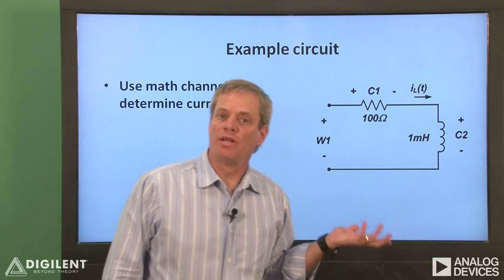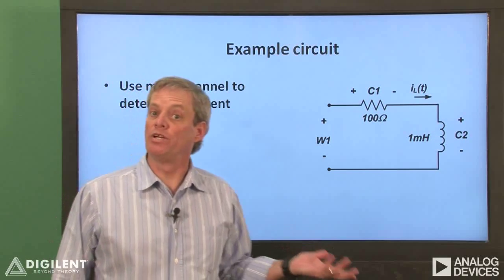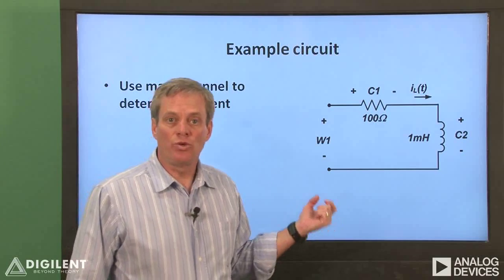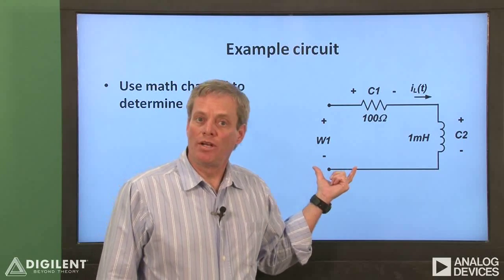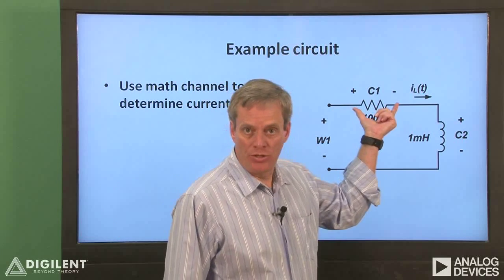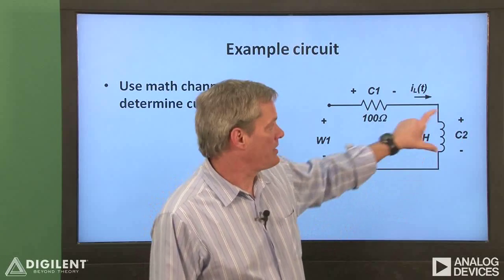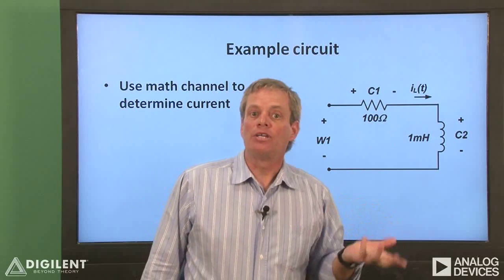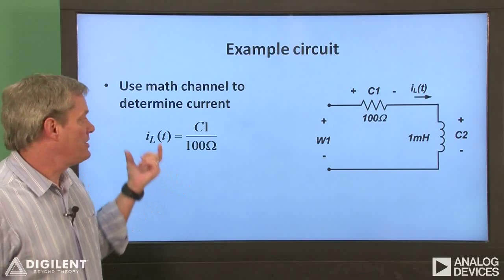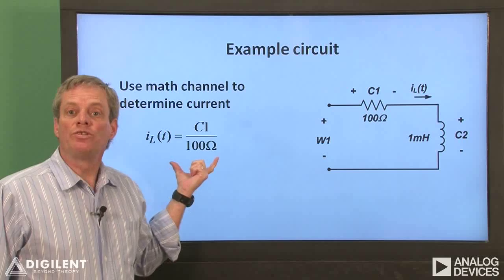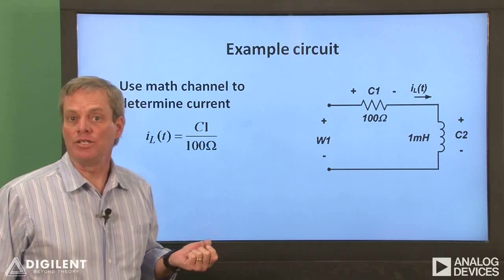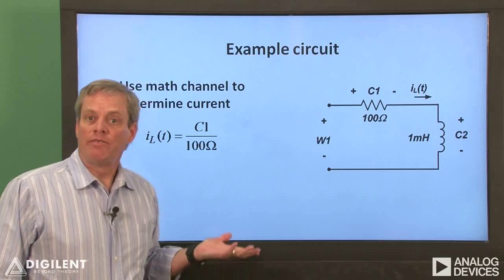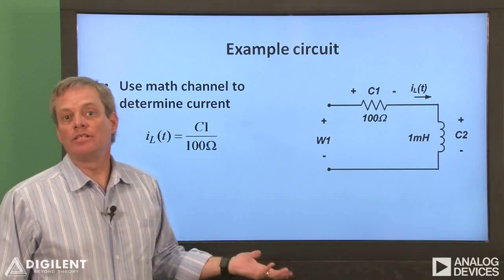We'll use this circuit to experimentally investigate the voltage-current relation we determined on the previous slides. We'll use a 100 ohm resistor in series with a 1 millihenry inductor. We'll apply a sinusoidal voltage to the combination using channel 1 of our arbitrary waveform generator. We'll measure the voltage across the resistor using channel 1 of the oscilloscope, and the voltage across the inductor using channel 2 of our oscilloscope. The resistor and the channel 1 measurement allow us to estimate the inductor current. The current is simply the voltage across the resistor divided by the resistance. We can use a math channel on the oscilloscope to perform this calculation. If we plot the channel 2 voltage and this current, we should be able to experimentally verify the plot I showed on the previous slide.